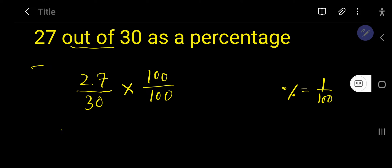So now, 27 over 30—we know that percentage means 1 over 100. So write like this. This 100, 1 over 100, will be converted to percentage.